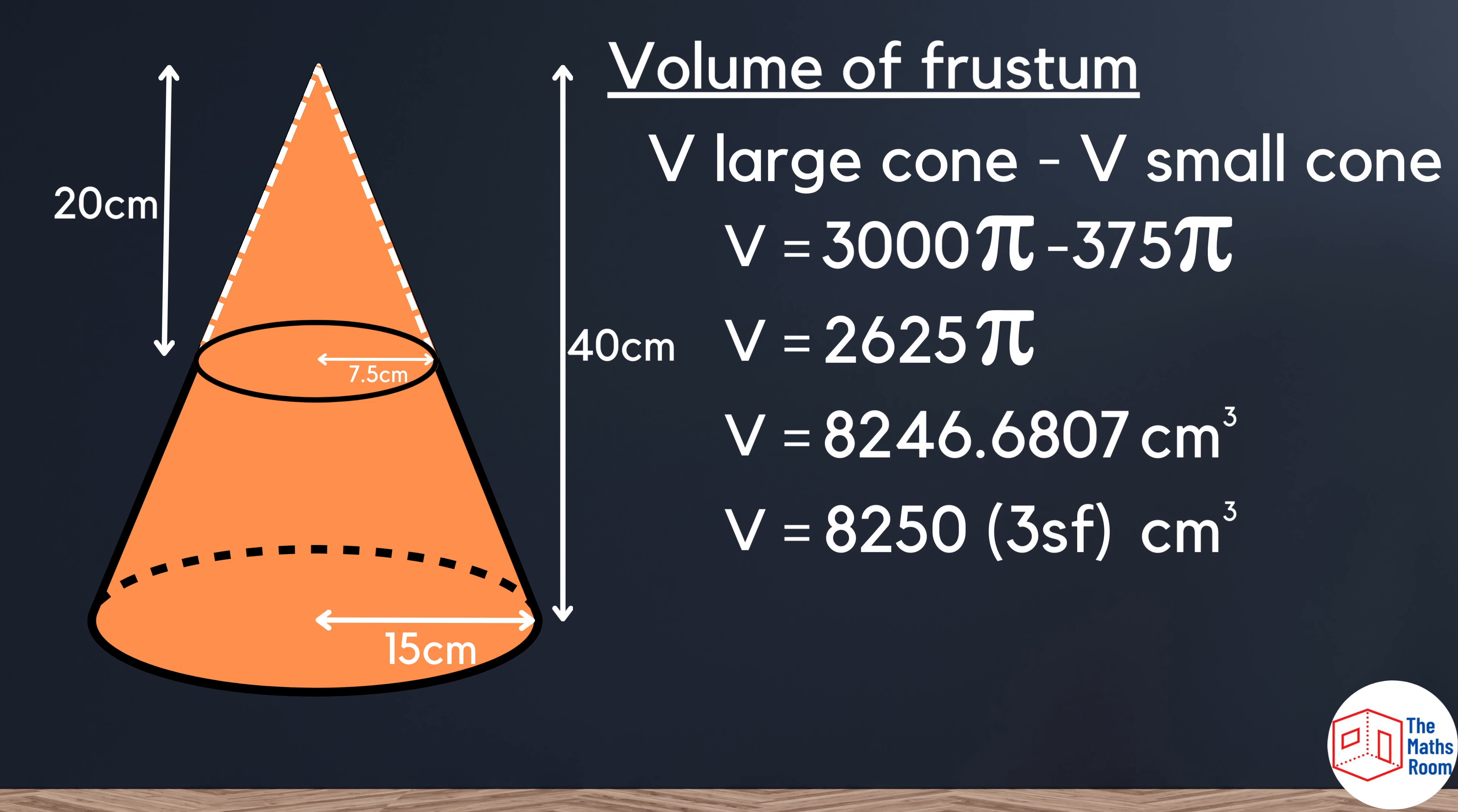Finally, multiplying 2625 by π, we get 8246.6807 cm³.